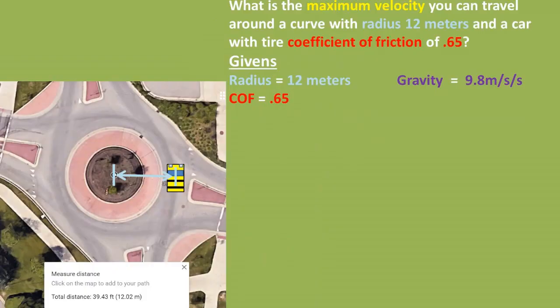For the first step of this problem, we want to find out what the maximum velocity you can travel around a curve or roundabout with radius of 12 meters, which was measured on Google Earth, in a car with a tire static coefficient of friction of 0.65.